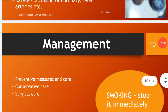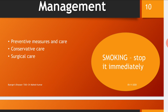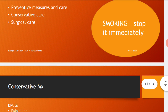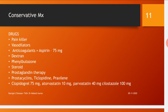Management of Buerger's disease covers three aspects: preventive measures, conservative care, and surgical care. First and most importantly, smoking must be stopped immediately to halt disease progression. For conservative management, various drugs are used including painkillers, vasodilators, anti-coagulants, dextran, phenylbutazone, steroids, prostaglandin therapy, prostacyclin, ticlopidine, pentoxifylline, clopidogrel, atorvastatin, pravastatin, and cilostazol, used depending on the patient's condition.